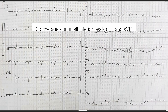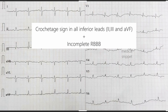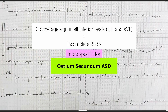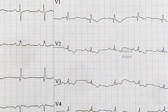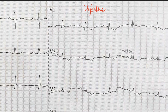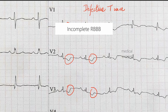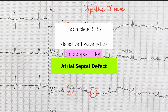If Crochetage sign is present in all three inferior leads — that is leads 2, 3 and AVF — along with incomplete right bundle branch block, it is more specific for the diagnosis of atrial septal defect. It should be noted that incomplete right bundle branch block without any other ECG changes may be a normal finding in children. Hence incomplete right bundle branch block alone is inadequate to diagnose ASD. In ASD there is also a defective T wave pattern, seen as inverted or horizontal displacement of the proximal T wave in the right precordial leads V1 to V3. Incomplete right bundle branch block along with the presence of defective T wave in V1 to V3 is also more specific to diagnose atrial septal defect.